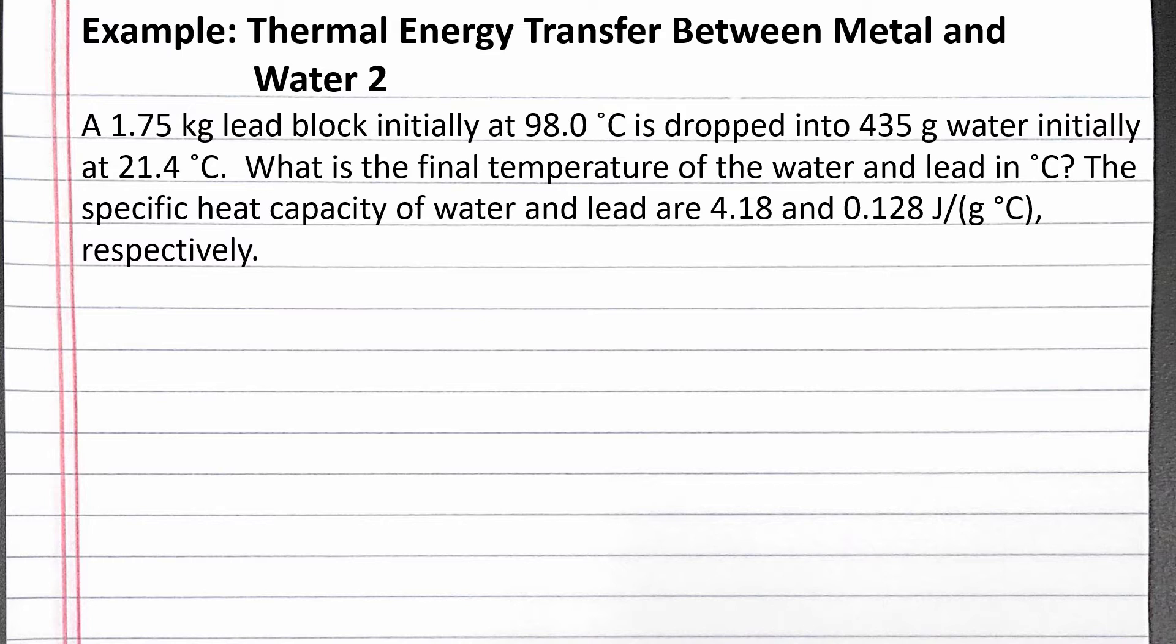The specific heat capacity of water and lead are 4.18 and 0.128 joules per gram degrees Celsius, respectively.